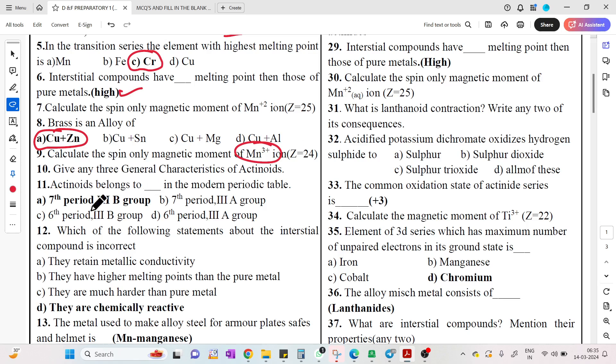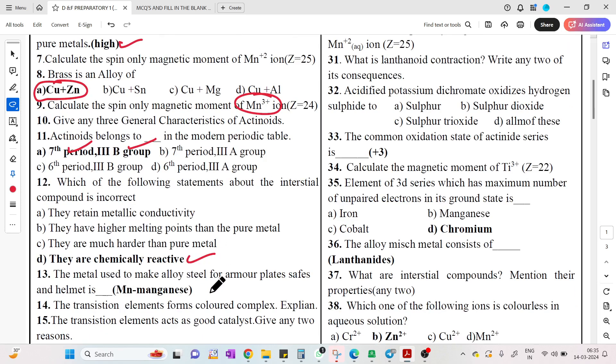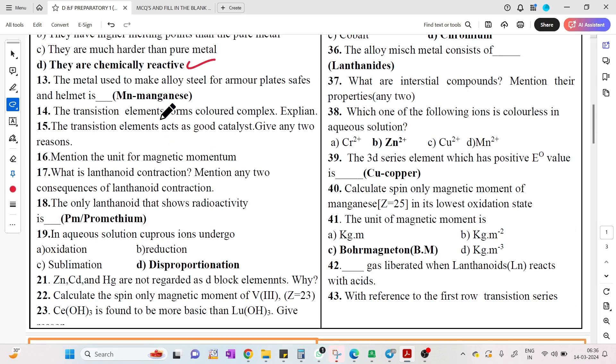Actinides belong to the seventh period element and third B group, remember. Which of the following statement about interstitial compounds is incorrect? Interstitial compounds - the incorrect one is chemically reactive.